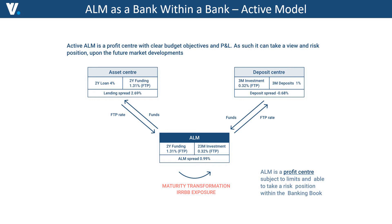So the asset center can say they have managed to earn 2.69% on a two-year transaction. On the liability side, the difference between the cost of funds paid to depositors — 1% — and the internal FTP rate which the deposit center receives from ALM — 0.32% — is negative: minus 0.68%. Why? Because the cost of deposits in the market is higher than the FTP rate. So the deposit center here has a negative NIM — a negative net interest margin.